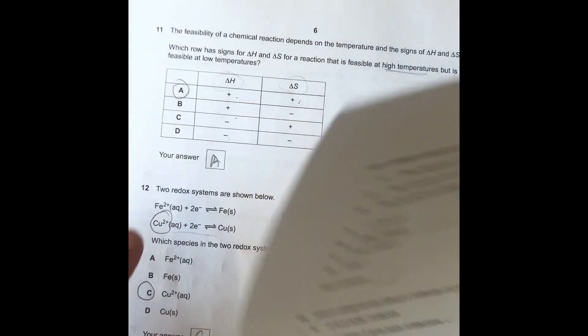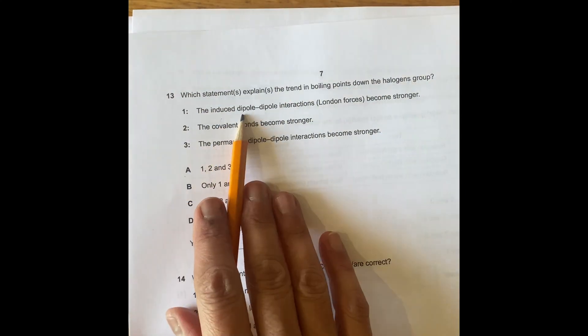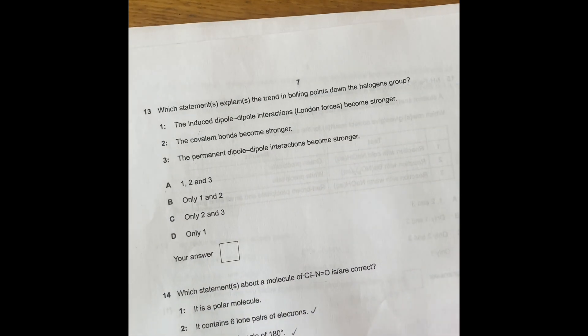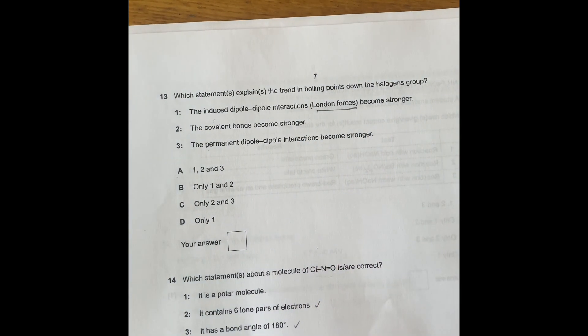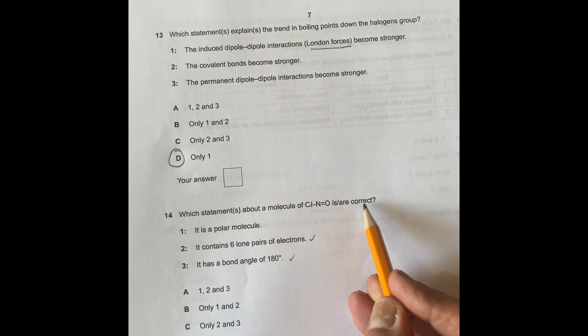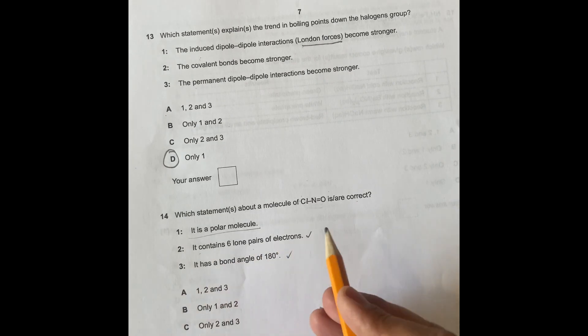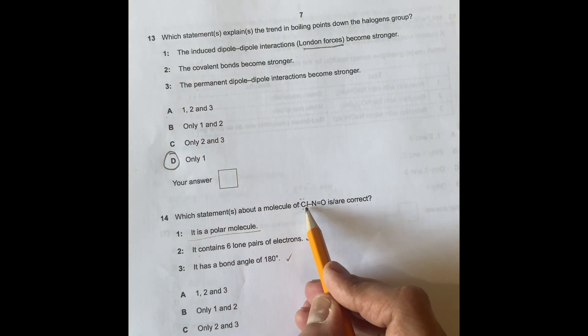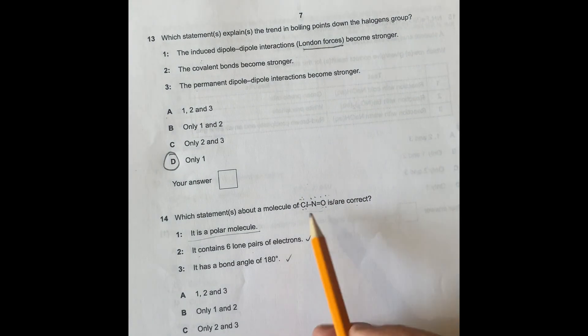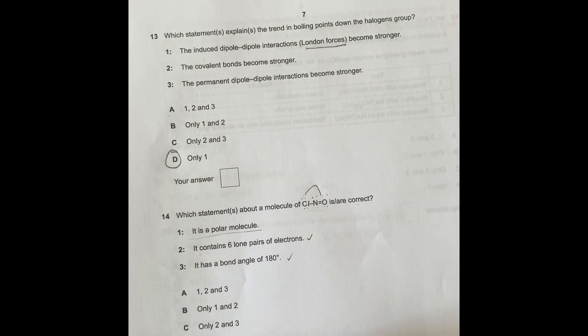Right, we're almost finishing. So the last one here, the last three. Which statement explains the trend in boiling points of the halogen group? It's always based on London forces. So for question 13 is only D. Which statement about the molecule is correct? So it's not a polar molecule, because dipoles cancel out, it's a symmetrical molecule. So it contains six pairs of electrons, so we've got one, two, three, four, five, and six. So it's got six lone pairs of electrons. It has a bond angle 180, which is correct, that one there, because it's a straight line. So it's going to be two and three only, so it's C.